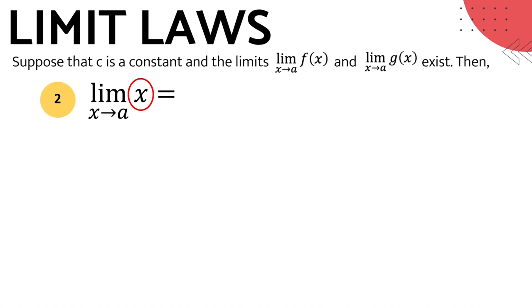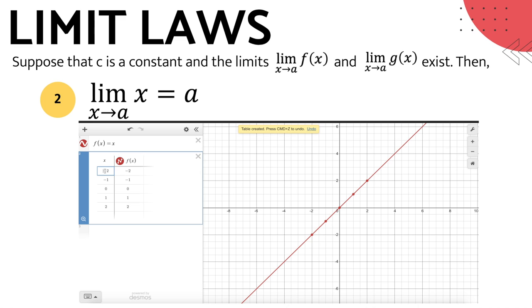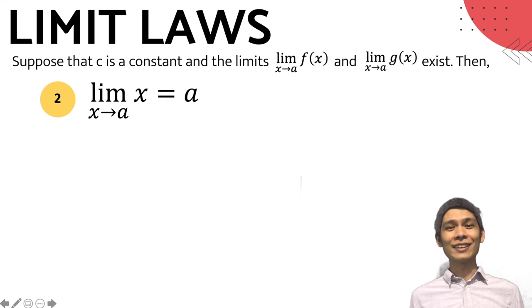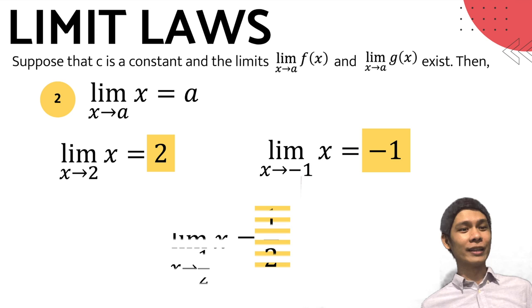The second limit law states that the limit of x as x approaches a number a is equivalent to a. Let me illustrate this by using table of values and the graph of the identity function. Looking at the graph of f(x) = x and the table of values, it clearly shows that the x and y coordinates are always the same. Therefore, if x approaches 0, then y also approaches 0; if x approaches 100, then y also approaches 100. Examples: the limit of x as x approaches 2 is 2, as x approaches negative 1 is negative 1, and as x approaches 1/2 is 1/2. For the remaining limit laws, you can verify the examples using the table of values in decimals.